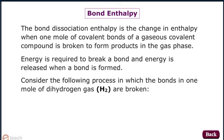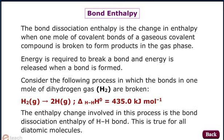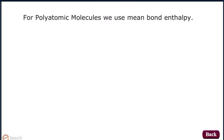Consider the following process in which the bonds in 1 mole of dihydrogen gas are broken: H₂ gas giving 2 H atoms in the gas phase. Delta H° of the H-H bond equals 435.0 kJ per mole. The enthalpy change involved in this process is the bond dissociation enthalpy of the hydrogen-hydrogen bond. This is true for all diatomic molecules. For polyatomic molecules, we use mean bond enthalpy.